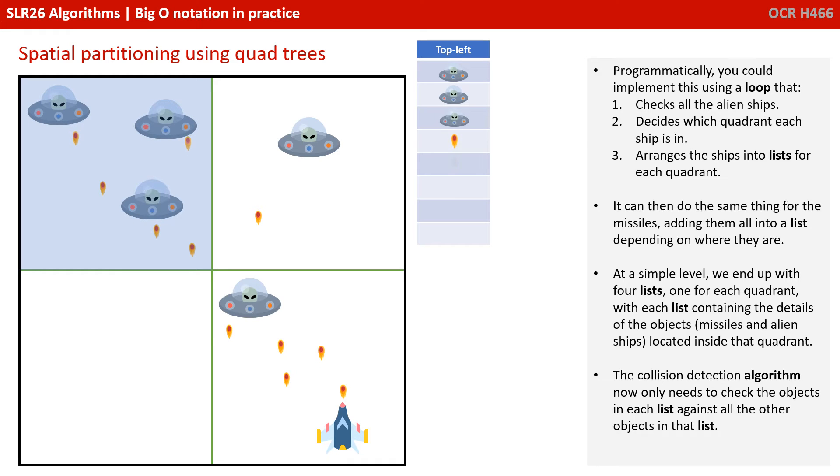Programmatically, you could implement this using a loop that checks all the alien ships, decides which quadrant each ship is in, and arranges the ships into lists for each quadrant. It can do the same thing for the missiles, adding them all into a list depending on where they are. At a simple level, we could end up with, say, four lists, one for each quadrant, with each list containing the details of the objects, the missiles and aliens, located inside that quadrant.